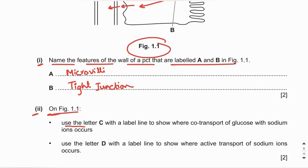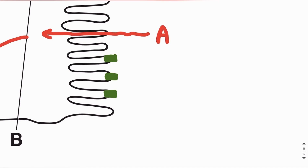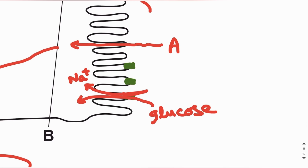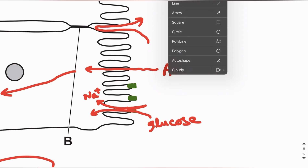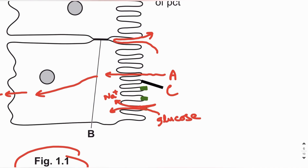Part two: use the letter C to show where co-transport of glucose with sodium ions occurs. The luminal membrane, which has microvilli, contains sodium-glucose co-transport proteins. These co-transport proteins transport sodium ions by diffusion into the cell, and together with sodium ions, glucose molecules are pumped against the concentration gradient into the cell. We label C at the luminal membrane where sodium and glucose are co-transported.